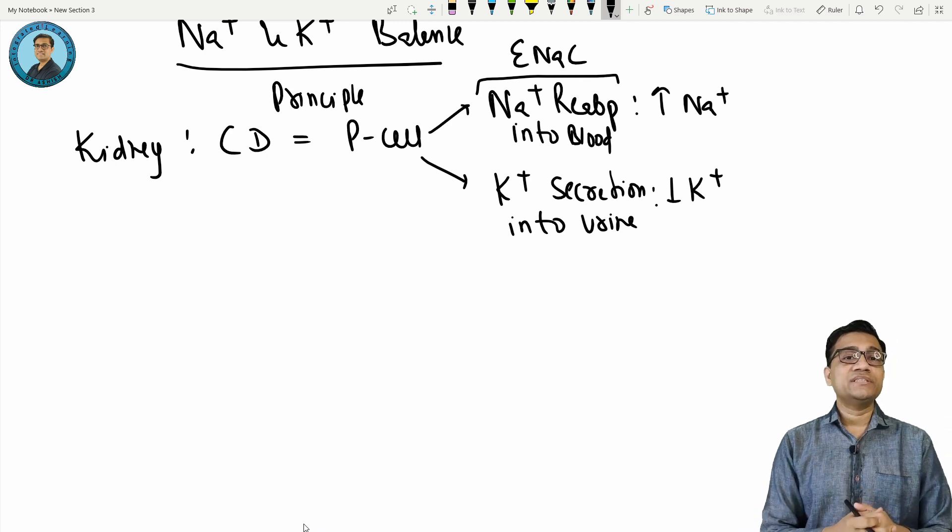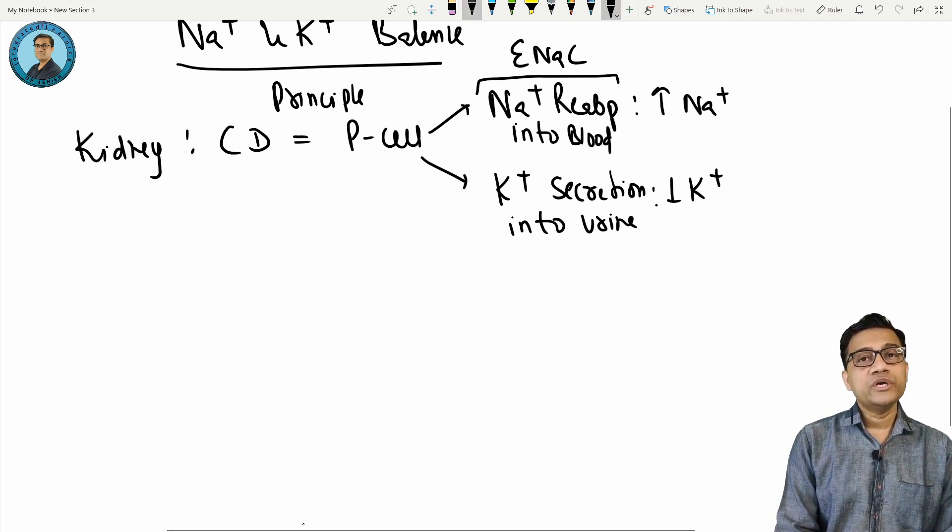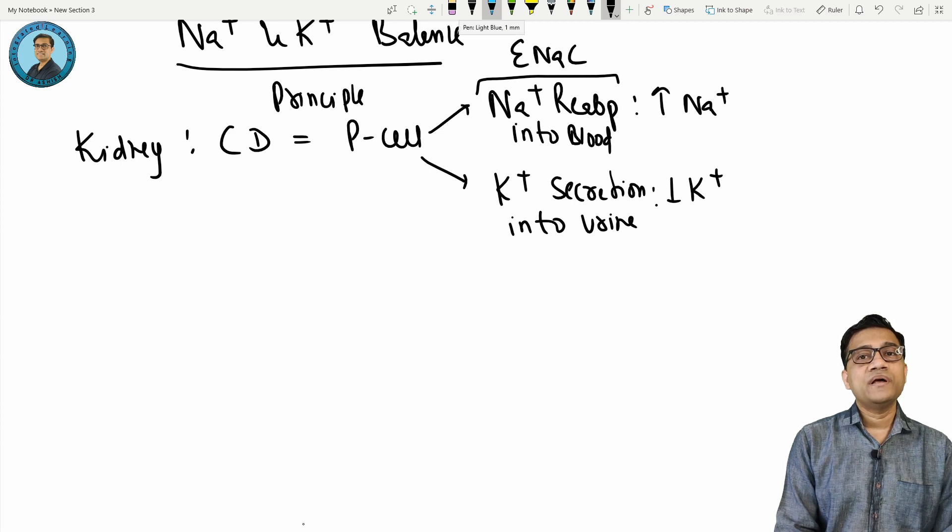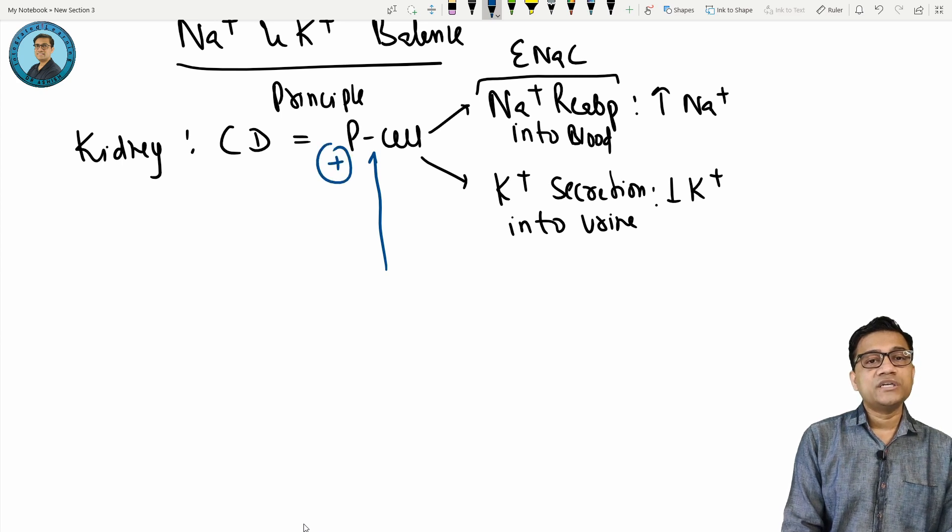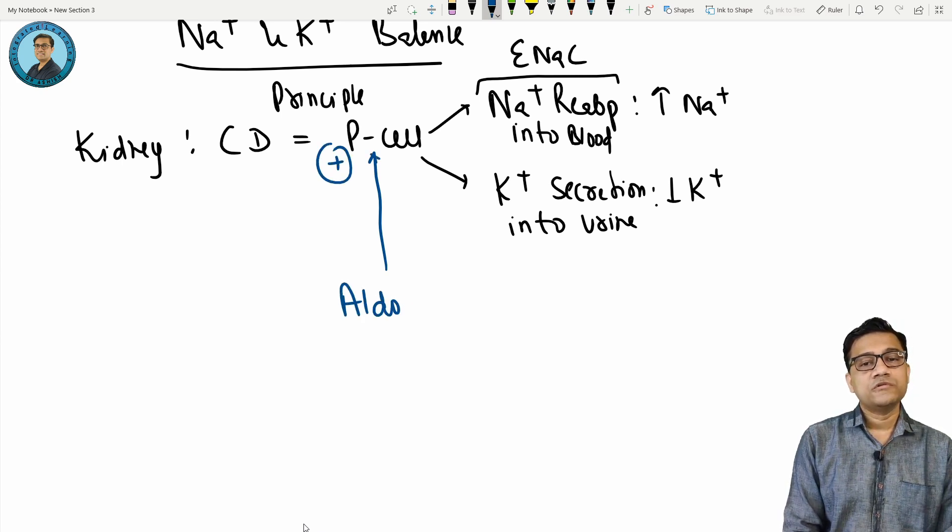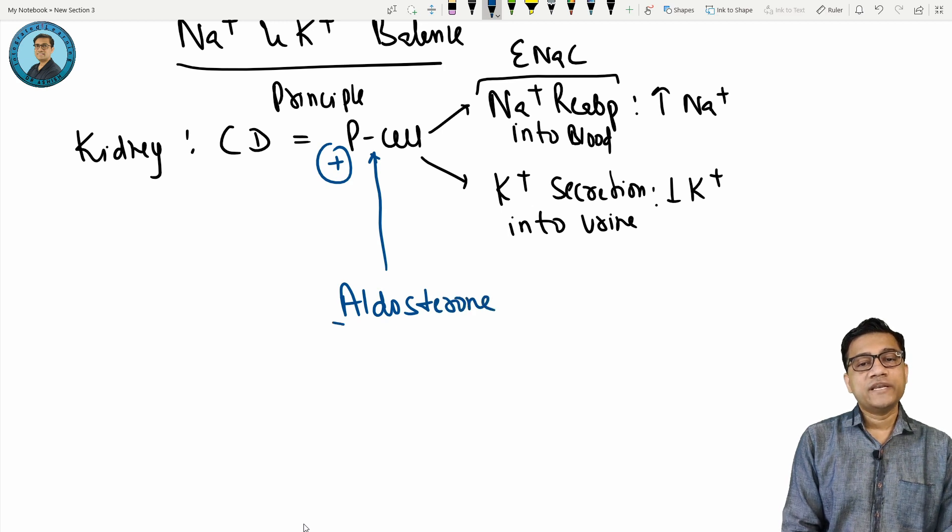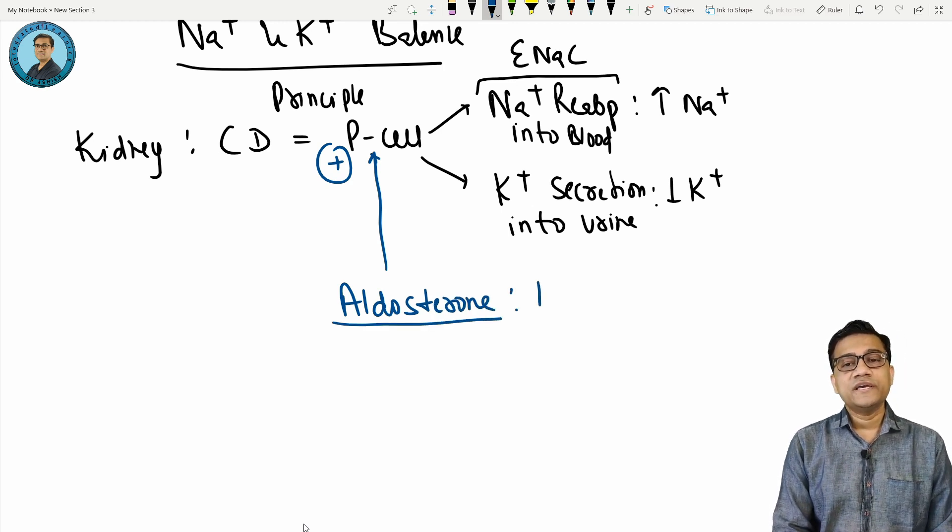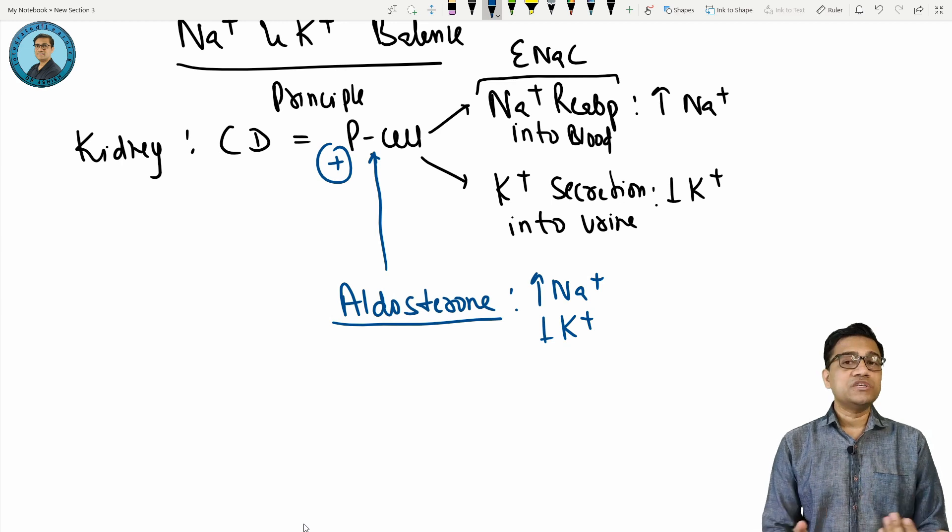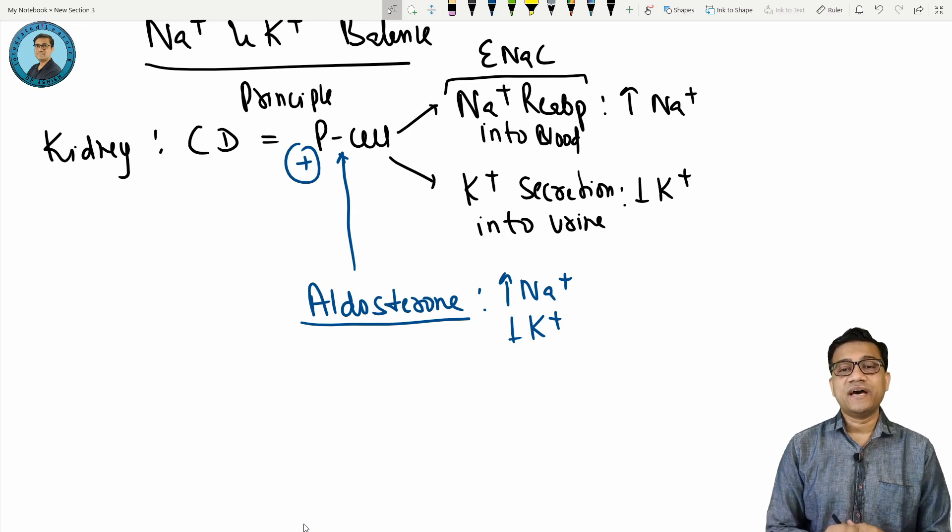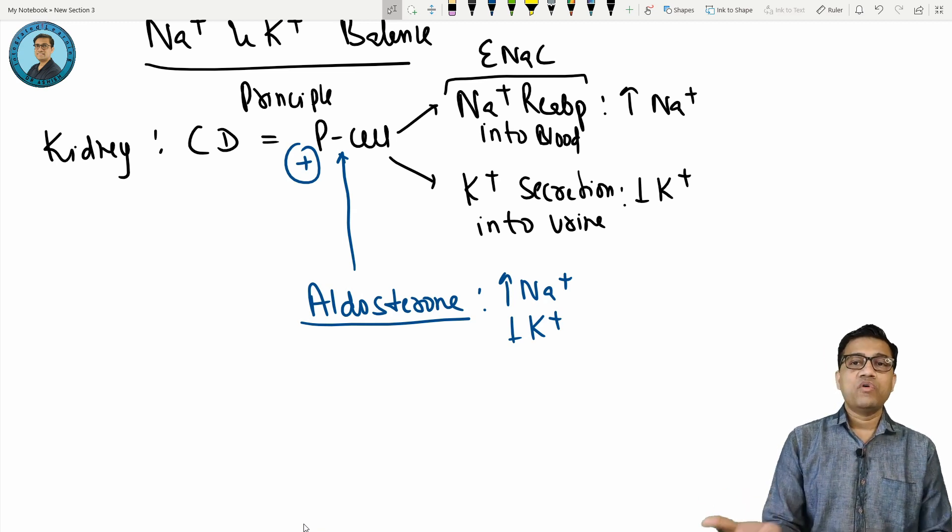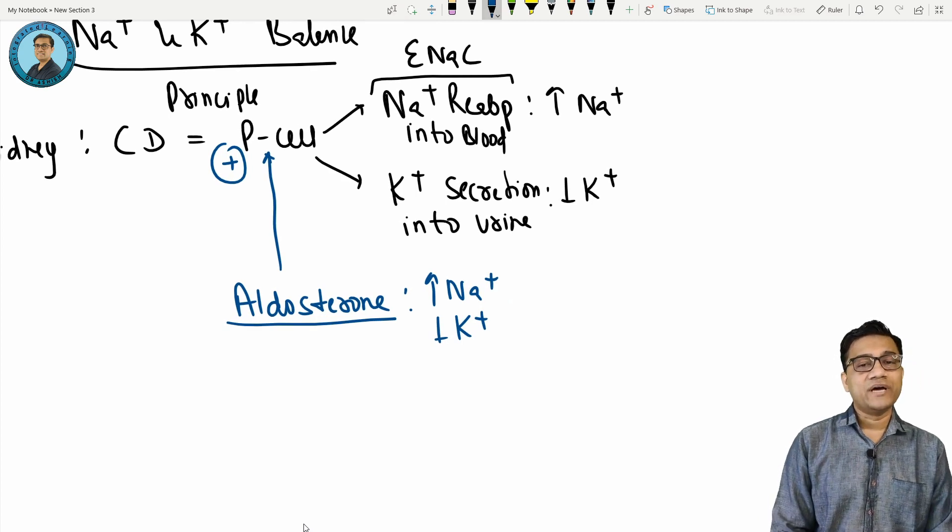Let's discuss who stimulates the P cell. P cells are stimulated by aldosterone. So technically what is aldosterone doing? It will increase blood sodium and decrease potassium in blood. It's causing high sodium and low potassium. If a person has aldosterone excess or deficit, what will we see? Two conditions are possible.